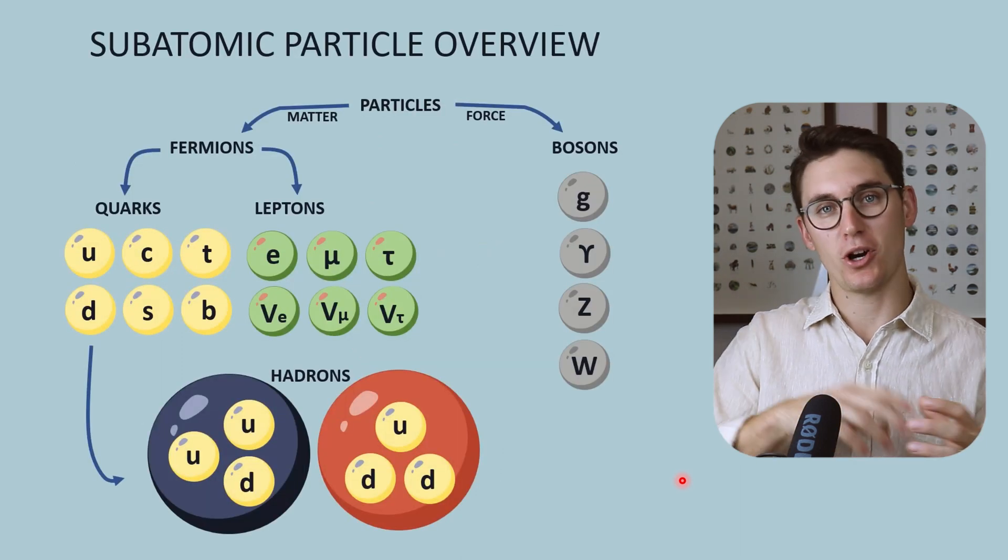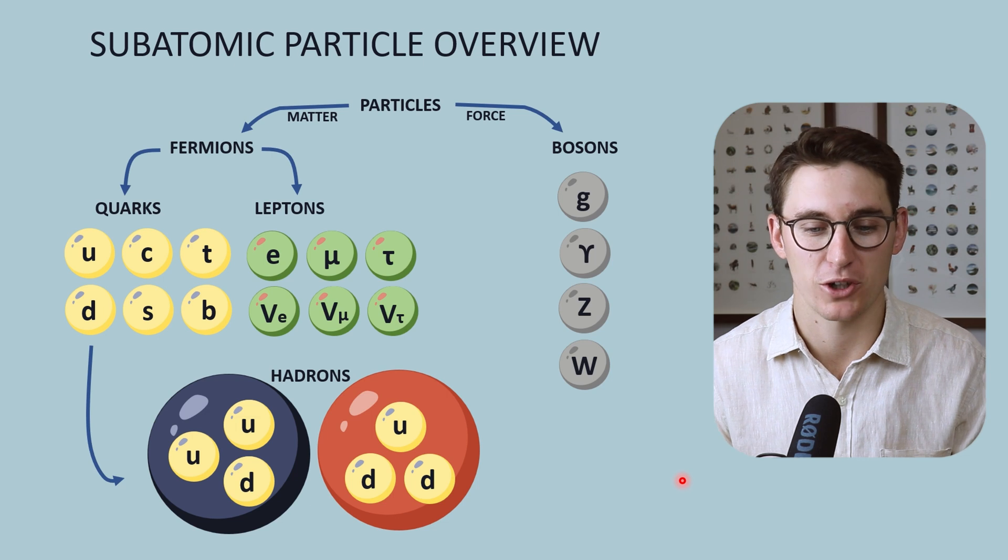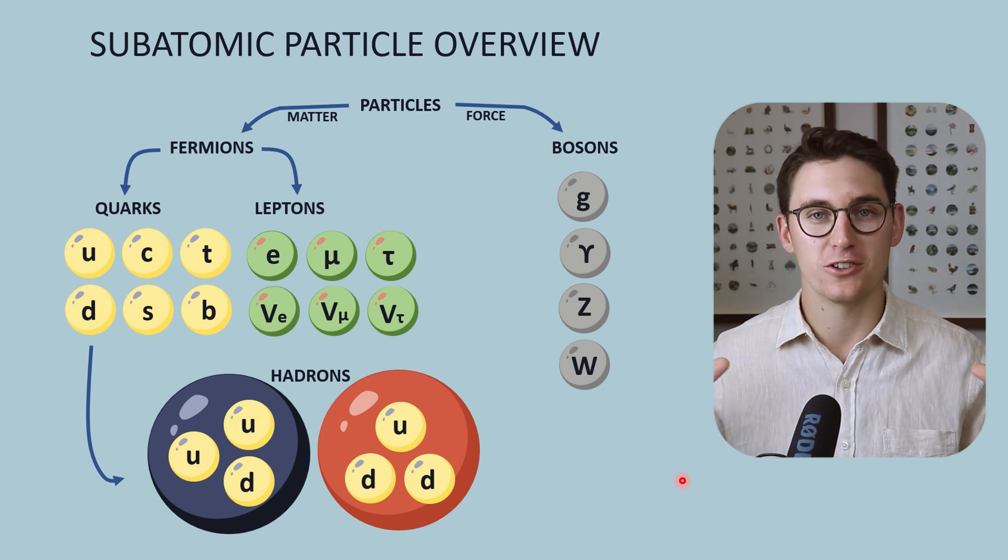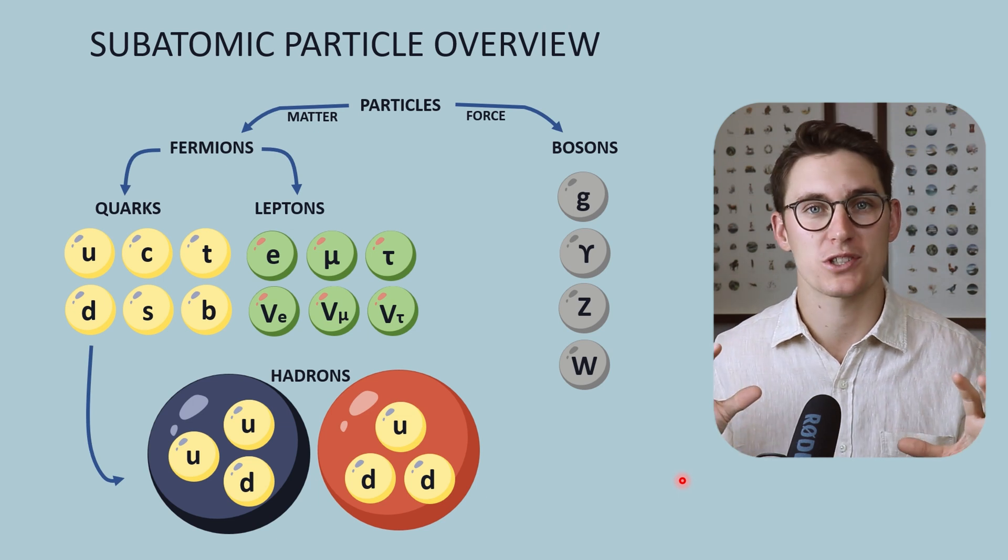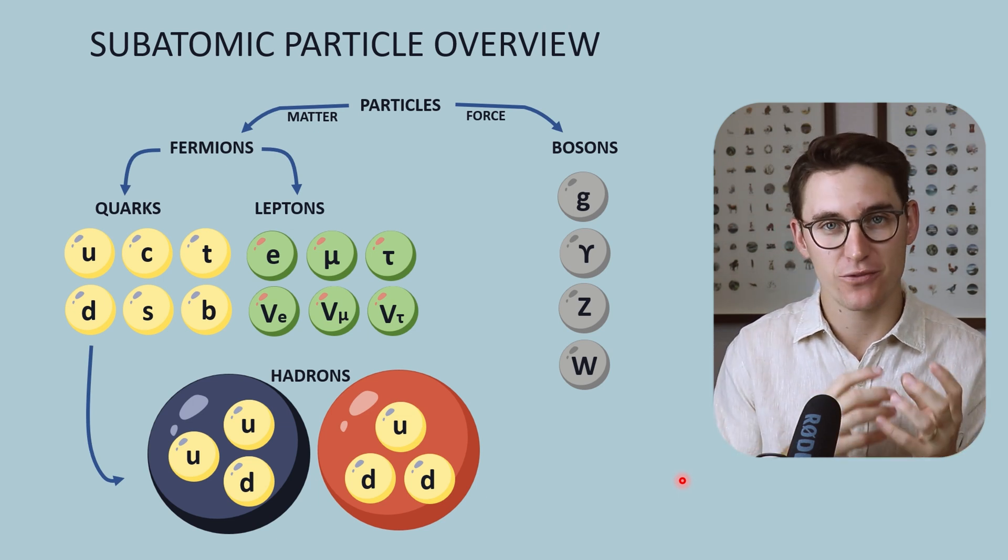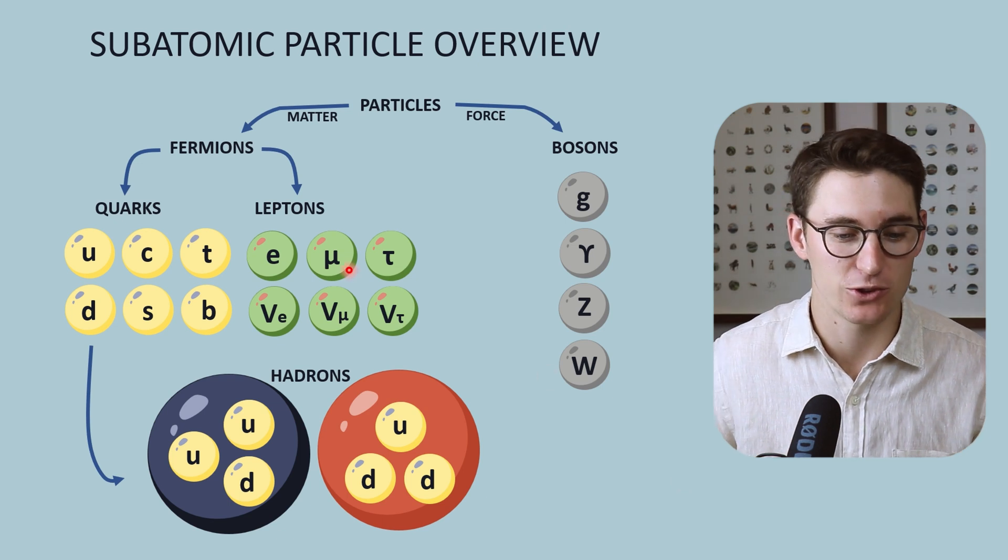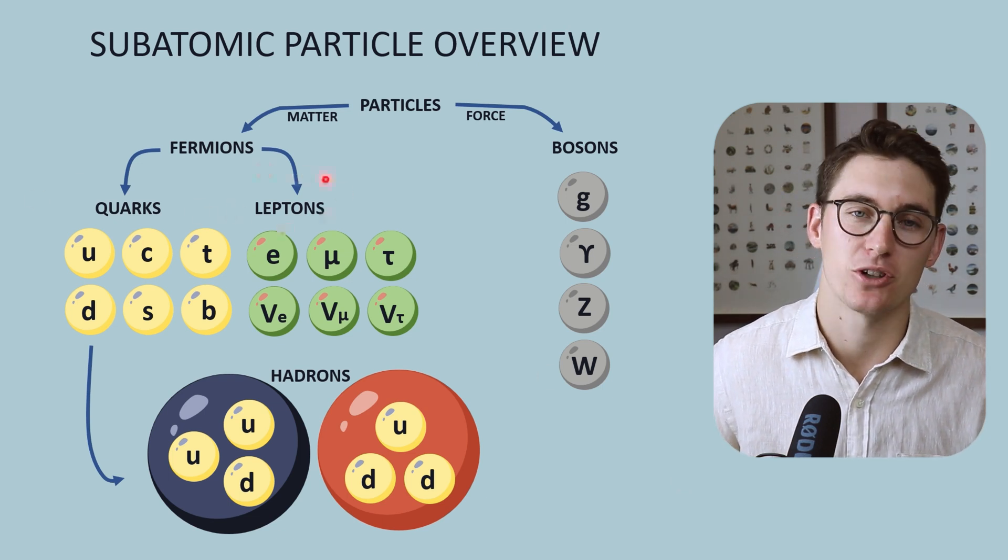How do we divide particles into subatomic particles? All particles within our universe can be divided into either matter or force. Matter consists of fermions, which can be further subdivided into quarks and leptons.